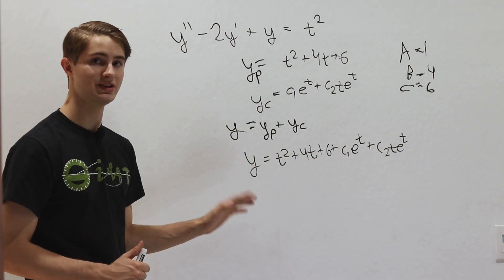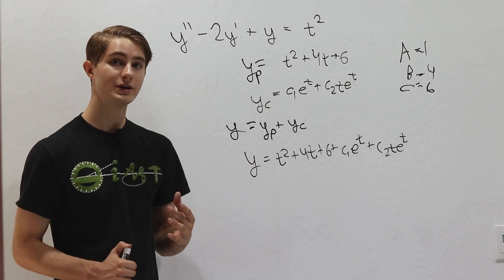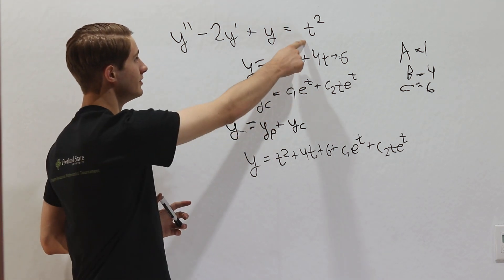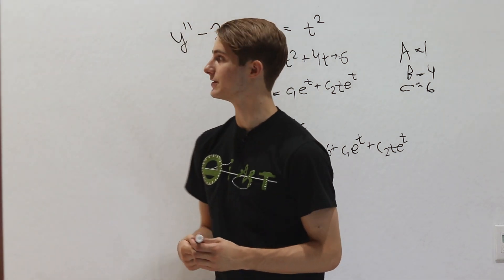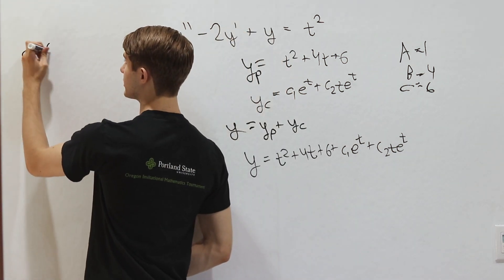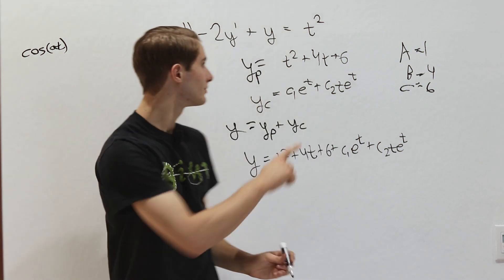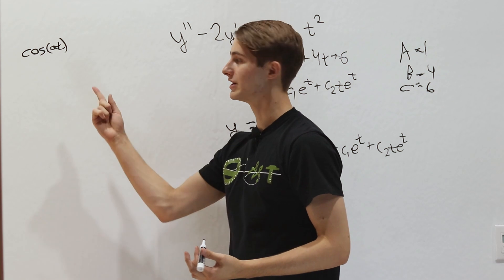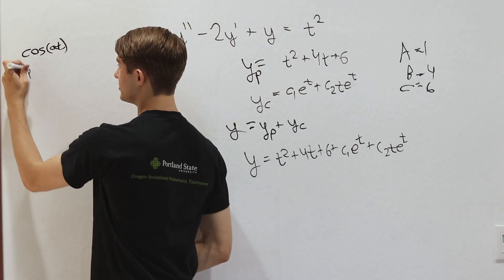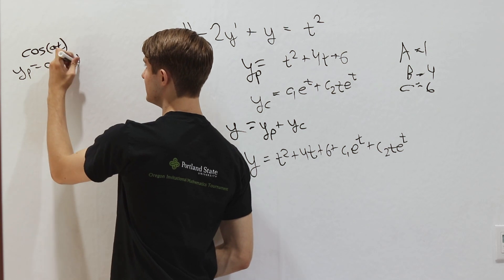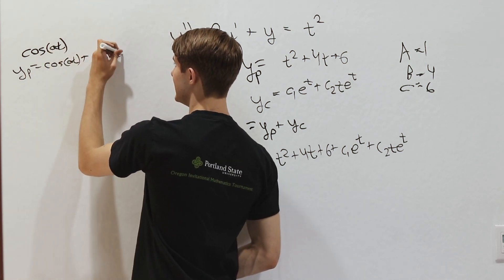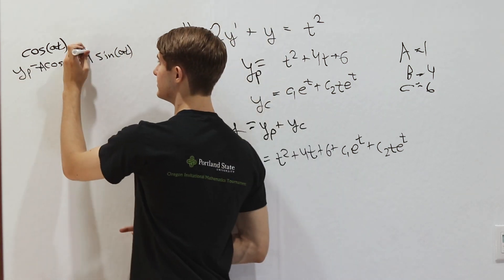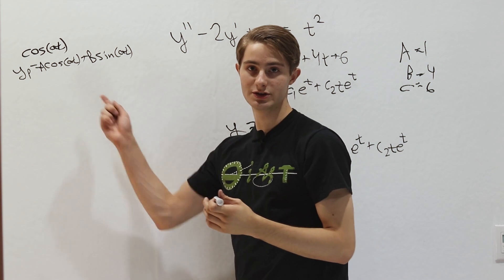This is just one example of undetermined coefficients. Let's cover rules for various right-hand sides. If you have cosine(at) on the right side, the functions whose derivatives equal cosine(at) are cosine(at) and sine(at). So you guess the particular solution is a cosine(at) plus b sine(at) and solve for those constants.